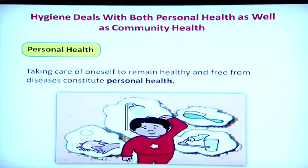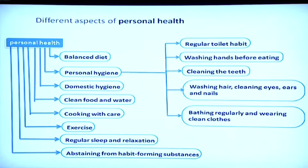The next topic is the aspects of hygiene, both at the personal level and at the community level. Let us take up the personal health aspects first. Taking care of oneself to remain healthy and free from disease constitutes personal health. The activities listed under personal hygiene include: balanced diet, personal hygiene, domestic hygiene, clean food and water, cooking with care, exercise, regular sleep and relaxation, and abstaining from habit-forming substances.